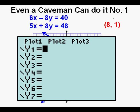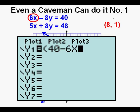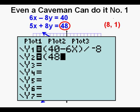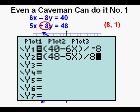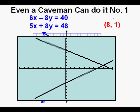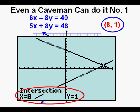Now we check the solution with the graphing calculator. We go to the Y= view, open parentheses, and place 40. We subtract 6x to eliminate it from the left, close parentheses, and divide by the coefficient of y, which is negative 8. We go down to Y2, open parentheses, enter 48, then subtract 5x to eliminate it from the left. We close parentheses and divide by the coefficient of y, which is 8.